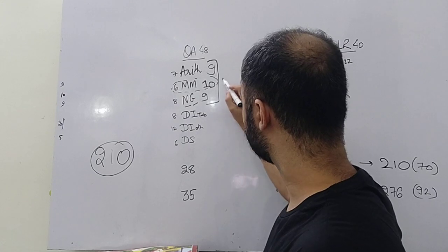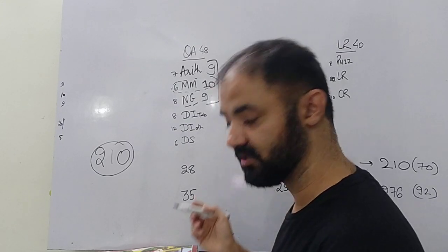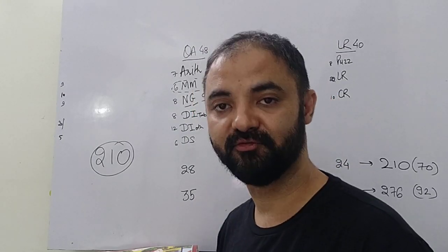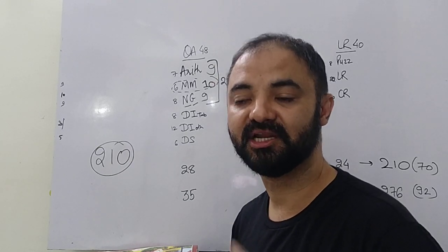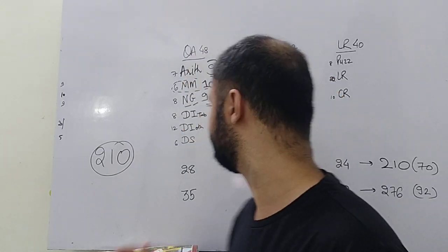So this is what quant was there. 28 marks of paper was quant. There is a possibility you get 24 marks of quant, 28 marks of quant, 30 marks of quant. The number of questions will change person to person.